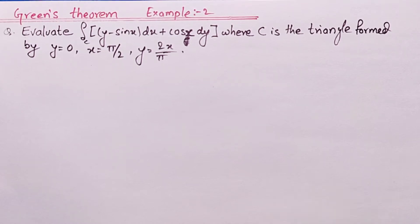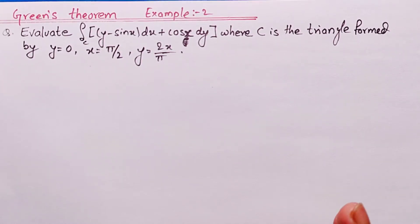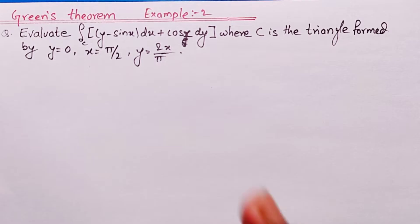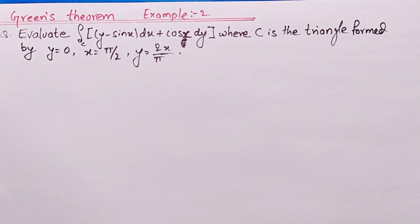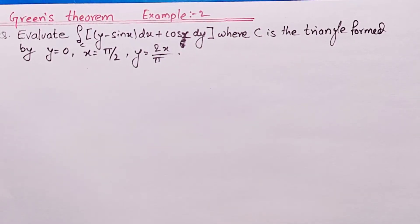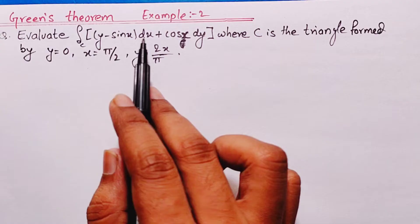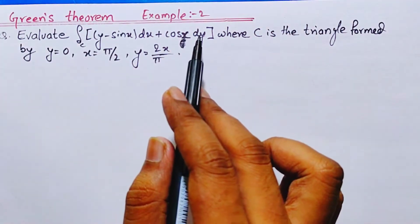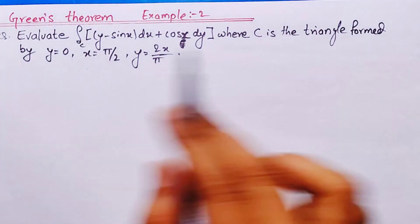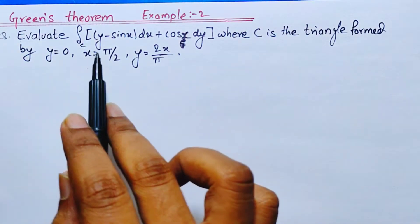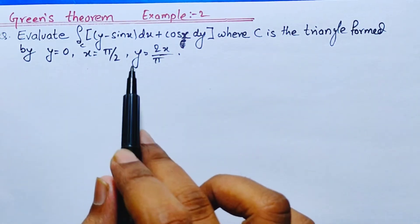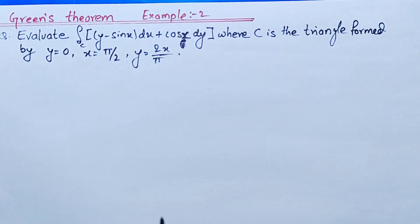Hey guys, welcome back to Civil Learning Online. As in the previous video we were discussing about Green's theorem, let us begin with that topic. I have selected a numerical and the question says: evaluate the integration of (y minus sin x) dx plus cos x dy, where C is the triangle formed by y equals 0, x equals pi by 2, and y equals 2x by pi. Let's get started.